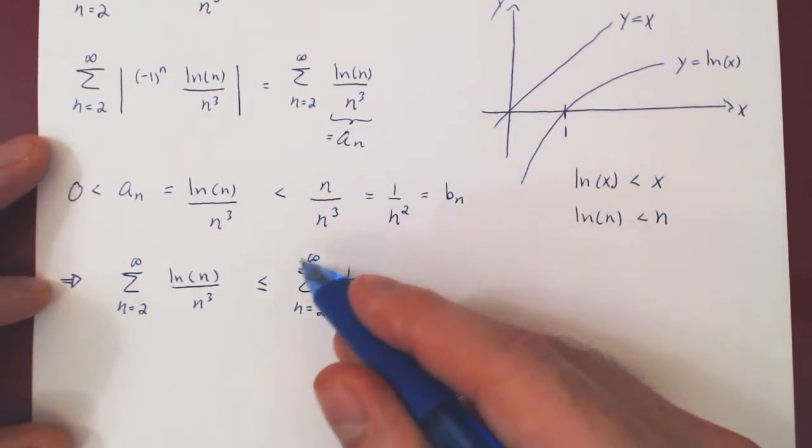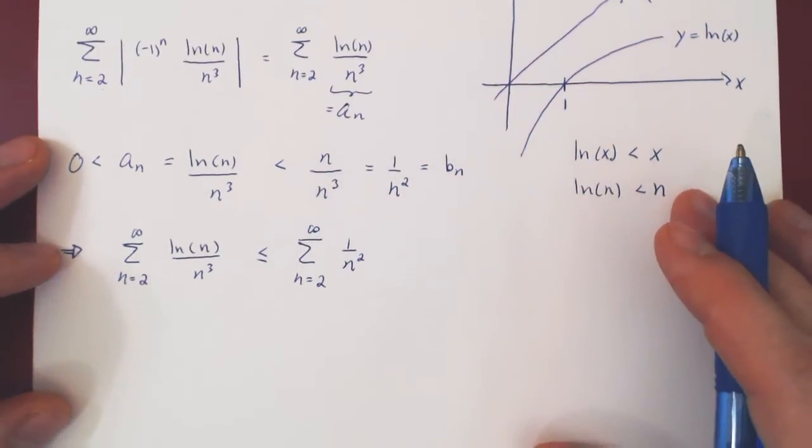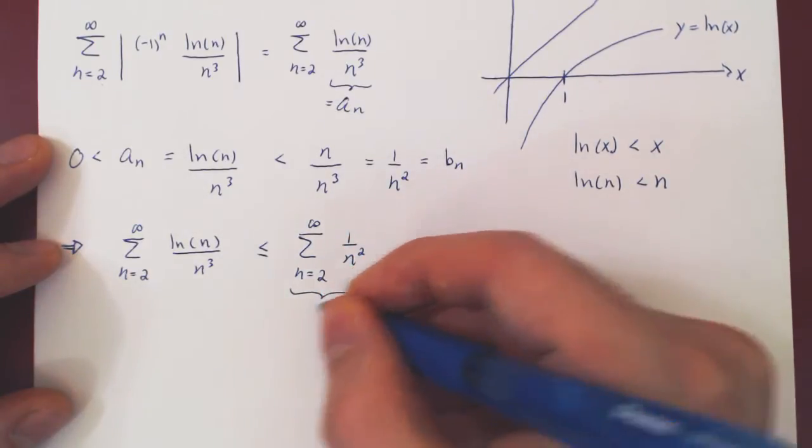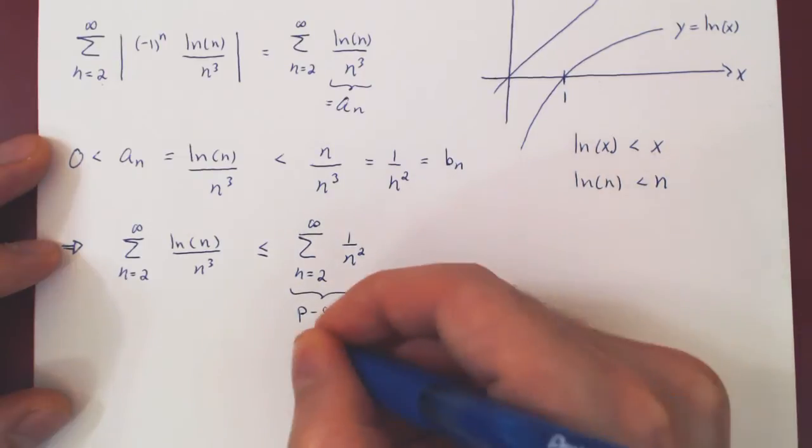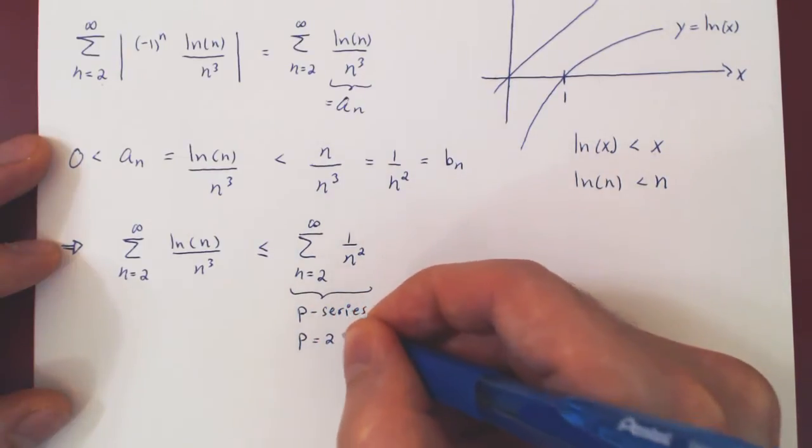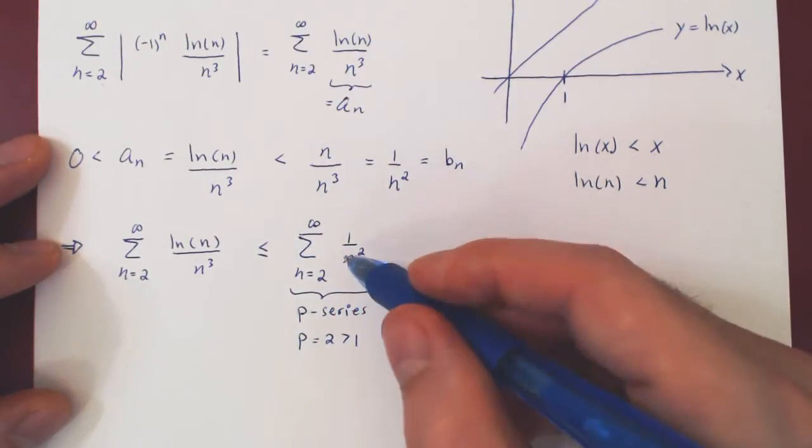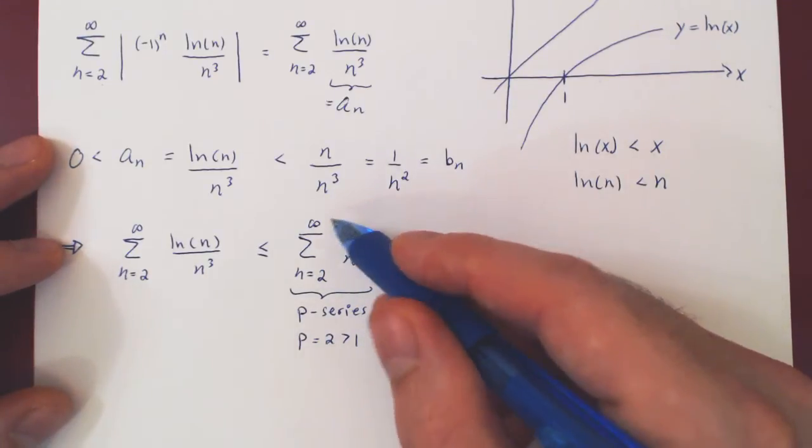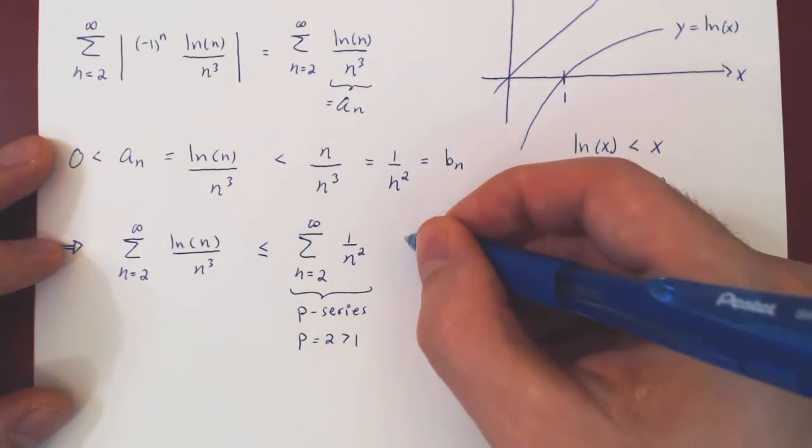But, this is now a simple p-series, where p equals 2, and 2 is strictly larger than 1. So this p-series converges, therefore is nothing but a real number, so it is finite.